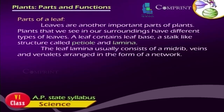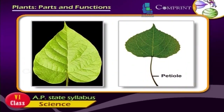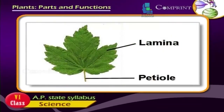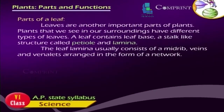Parts of a leaf. Leaves are another important part of plants. Plants that we see in our surroundings have different types of leaves. A leaf contains a leaf base, a stalk-like structure called a petiole, and a lamina. The leaf lamina usually consists of a midrib, veins and veinlets arranged in the form of a network.